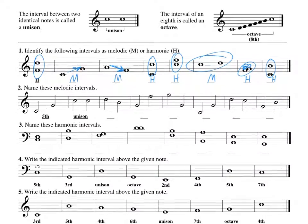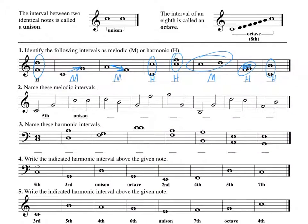Below, name these melodic intervals — the distance. Since they're melodic, that means they go from left to right. All you have to do is count. This is space, line. So we have line, space, line — that is a third.